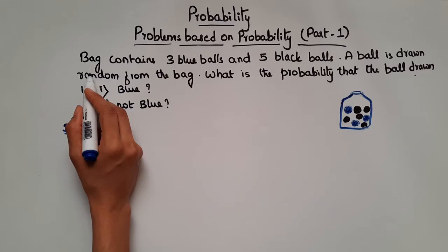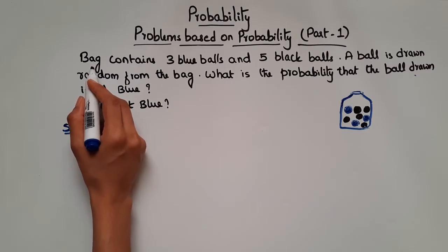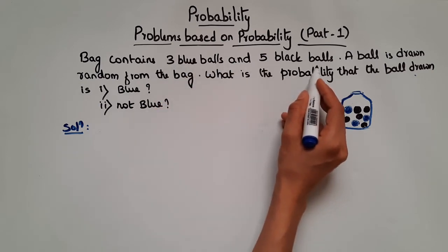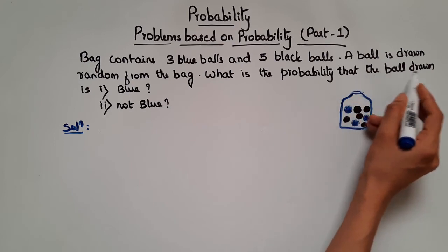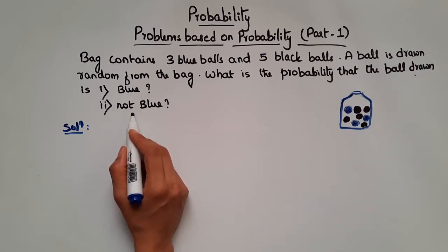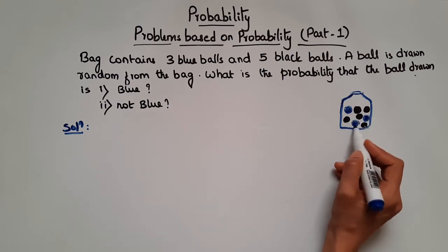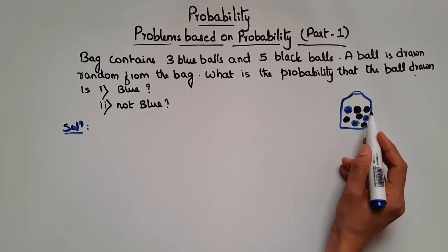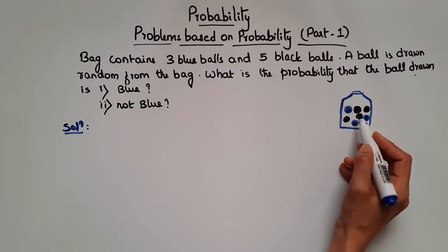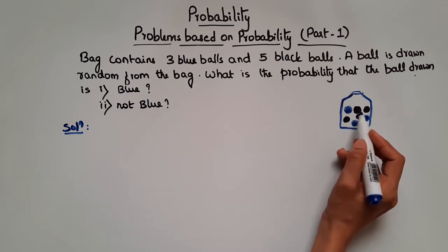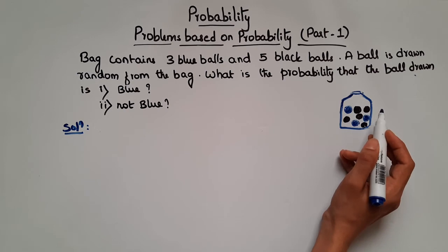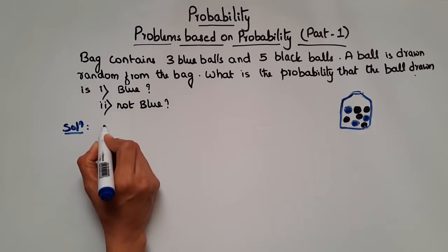Now the next problem: a bag contains 3 blue balls and 5 black balls. A ball is drawn at random from the bag. What is the probability that the ball drawn is blue? And what is the probability that the ball drawn is not blue? So we have a bag with 3 blue balls and 5 black balls.